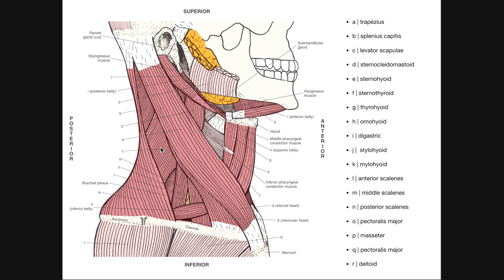Muscle C is a little bit deep to the trapezius — this is going to be levator scapulae. This one originates from some of those upper cervical vertebrae, specifically the transverse processes, and then extends downward to insert on the scapula, specifically on the superior part of the medial border.